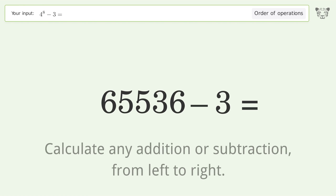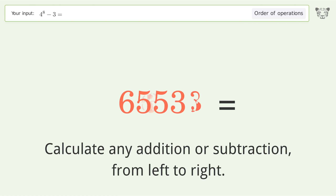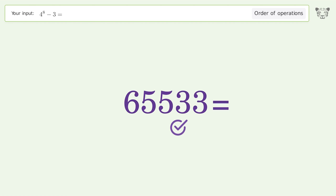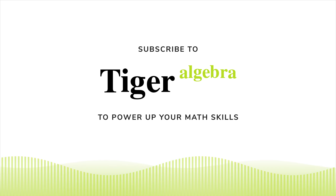First, simplify exponents and square roots: 4 to the power of 8 equals 65,536. Then calculate any addition or subtraction from left to right: 65,536 minus 3 equals 65,533. And so the final result is 65,533.